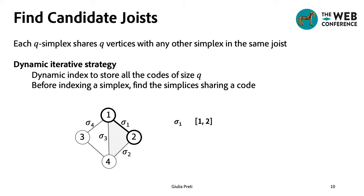To solve this problem, we store the simplices in a dynamic inverted index, such that simplices that can belong to the same joist are hashed together. Since each q simplex shares exactly q vertices with any other simplex in the joist, we use hash codes of size q.